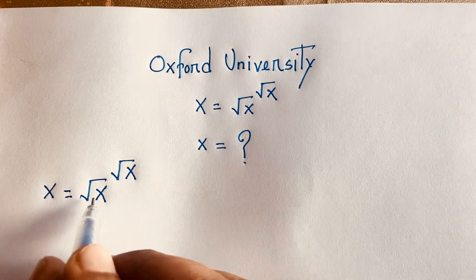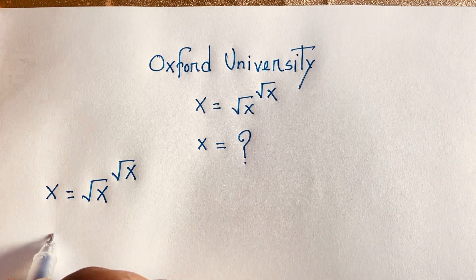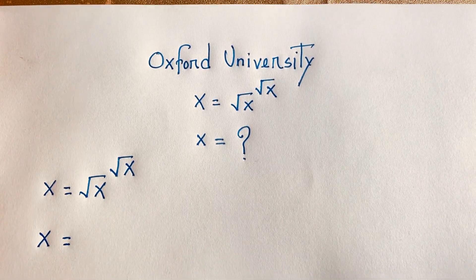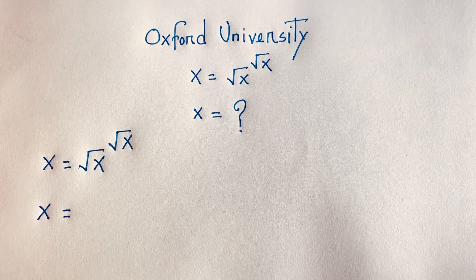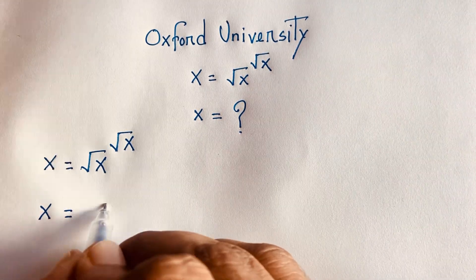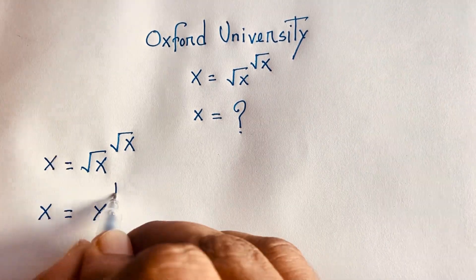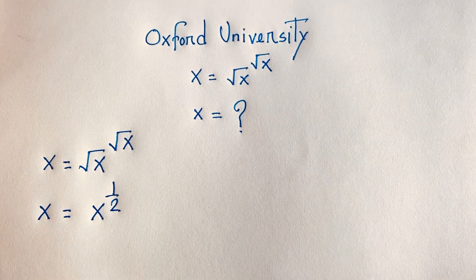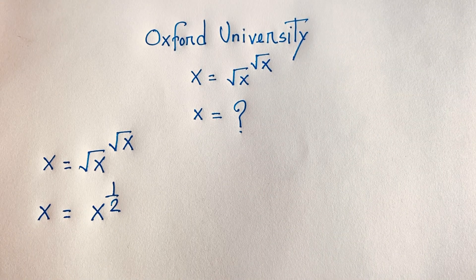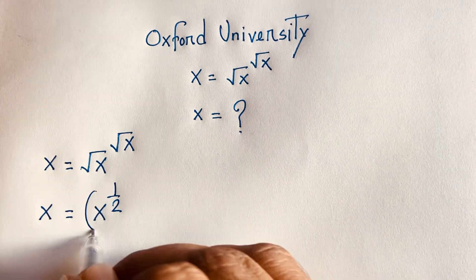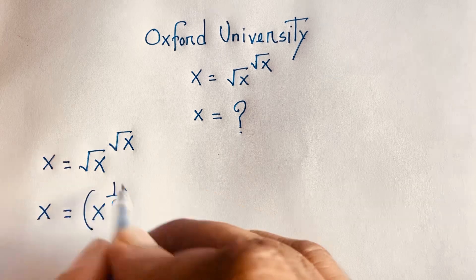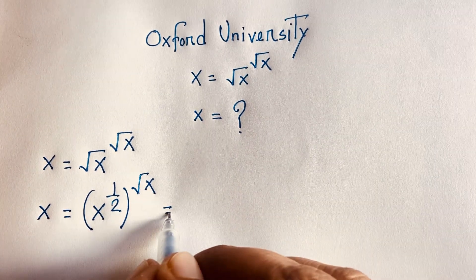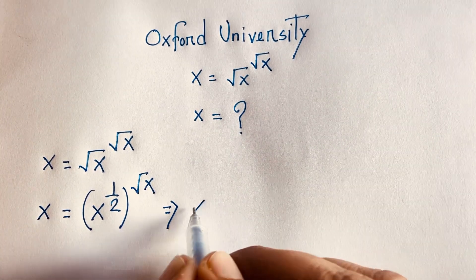Our question is x equals square root x to the power square root x. We know that square root x can be written as x to the power one over two. We also know that a to the power half is square root a, and here the exponent is square root x.